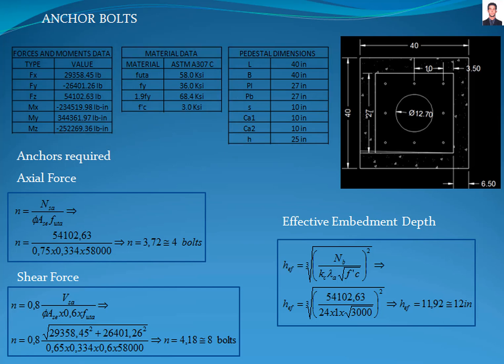The first thing to do is calculate the quantity of bolts required due to the reaction forces acting at the base. The bolts required due to the axial force is calculated with equation 17.6.1.2 of the ACI 318 standard, where NAS is the axial force, phi is a reduction factor equal to 0.75 in accordance with table 17.5.3A for tension. The ASTM A307 grade C material meets the requirement for a ductile material.